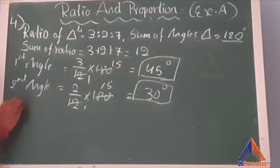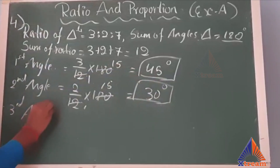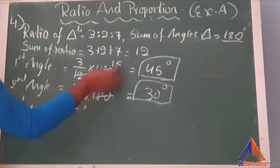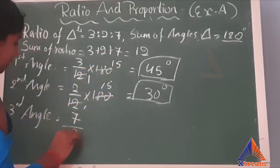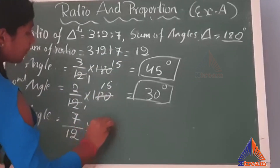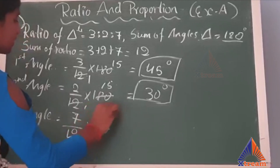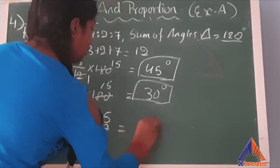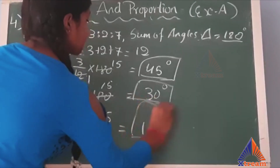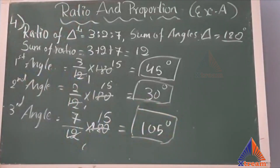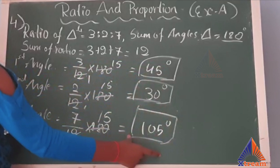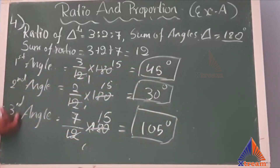Now let's find the third angle. The third term is 7, so 7 by 12 into 180: 15 into 7 is 105 degrees. That is our third angle. So we have all three angles: 45 degrees, 30 degrees, and 105 degrees. This is how to find each angle when the ratio of angles of a triangle is given.